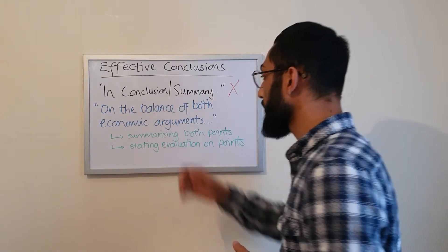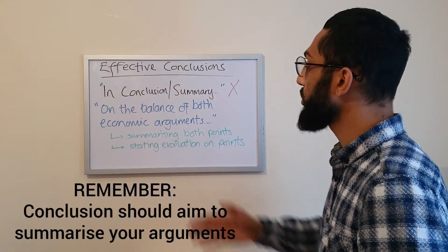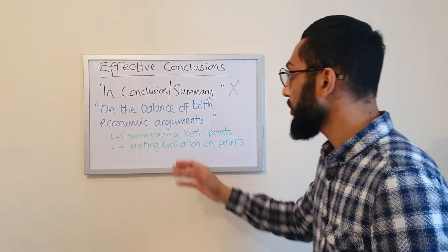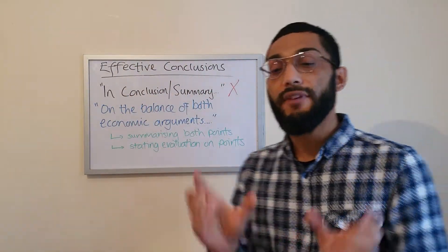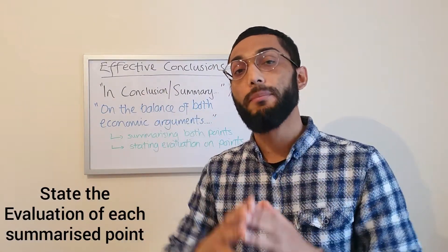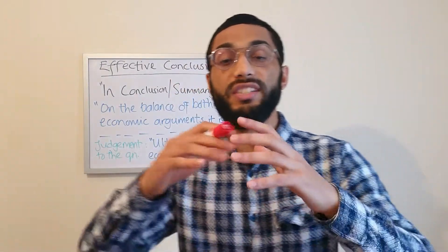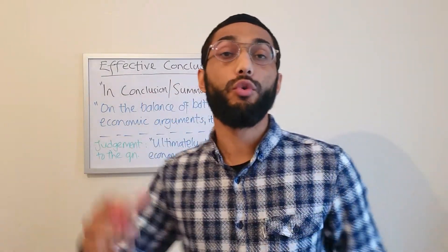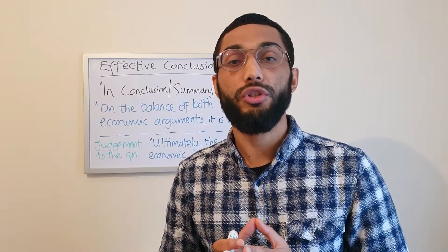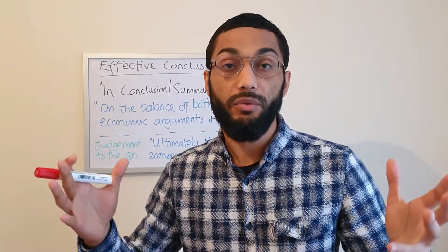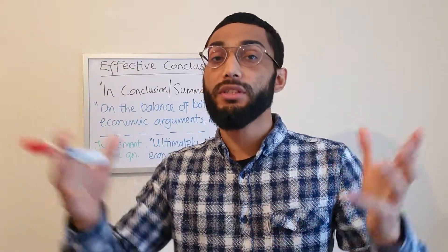Remember, in the conclusion, after you've started this, your focus is going to be to summarise both the points that you've made, but also to state the evaluative points on both of them. So you're showing balance and evaluation in your conclusion — you state your points for versus against with your evaluative points. This makes it very clear that you have assessed and evaluated both your economic arguments, and you summarise your arguments thus far.